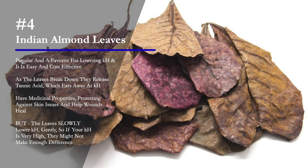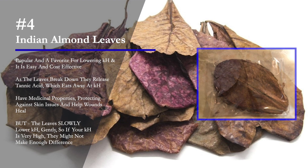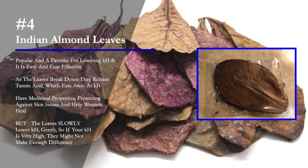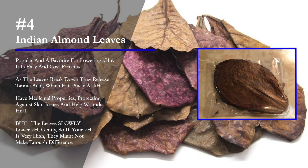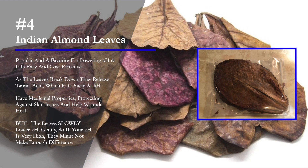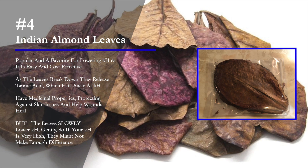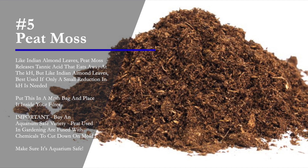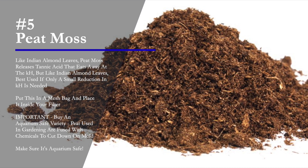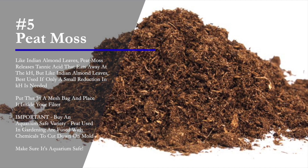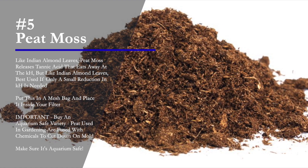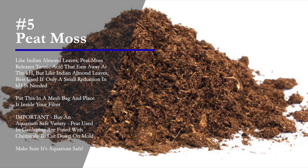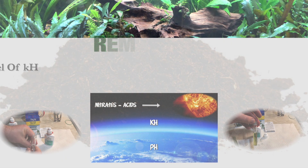Number four is a very popular and cost-effective way to lower KH: Indian almond leaves. As the leaves break down they release tannic acid, which eats away at the KH. They also have medicinal properties, protecting against skin issues and helping wounds heal, but they will slowly and gently lower KH — so if your KH is really high these might not make enough of a difference. Number five is peat moss. Just like the leaves, peat moss releases tannic acid that eats away at the KH. You can put it in a mesh bag and place it in your filter. It's good for small reductions in KH, but make sure you buy an aquarium-safe variety, not peat used for gardening that's fused with chemicals to cut down on mold.